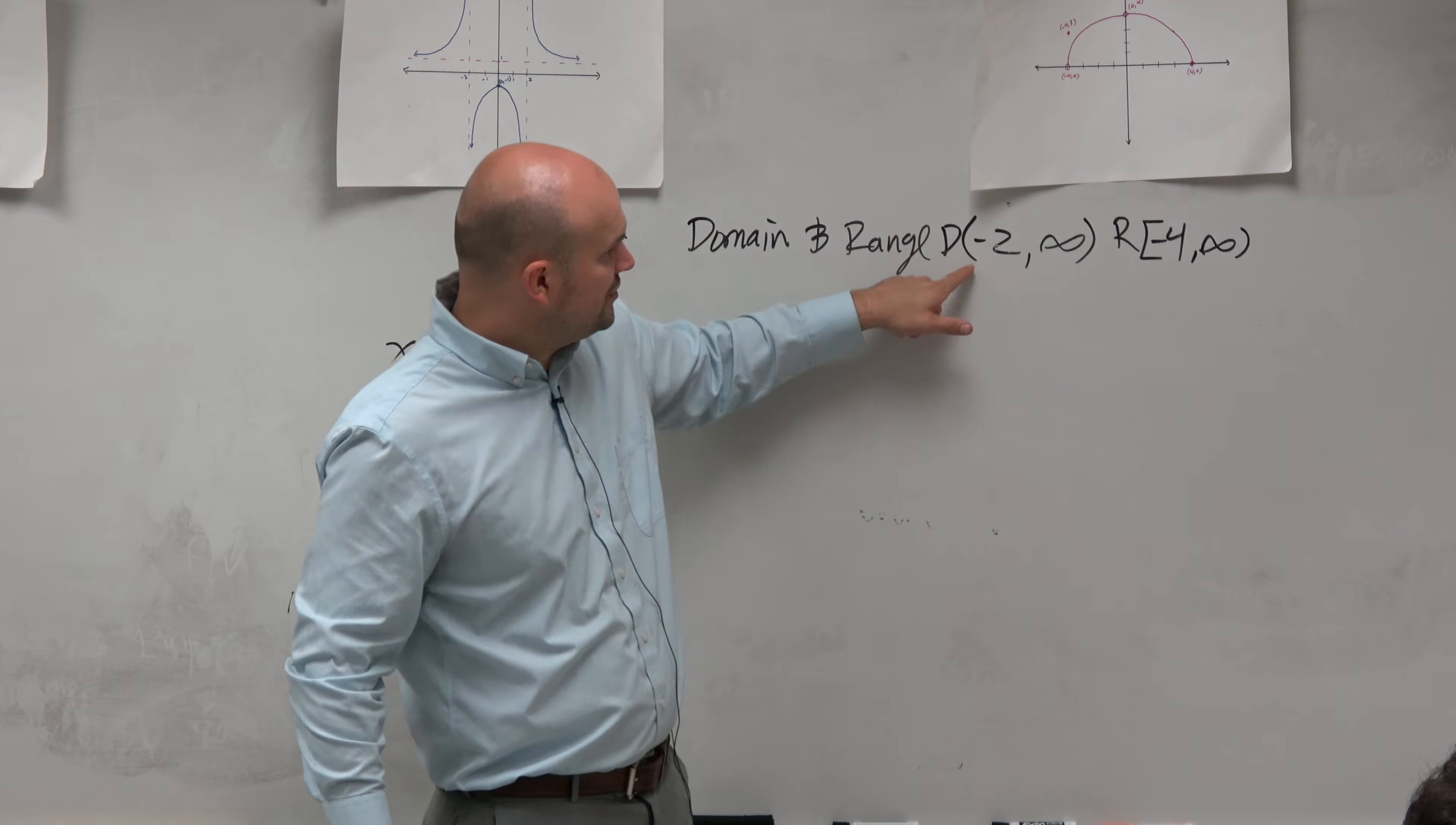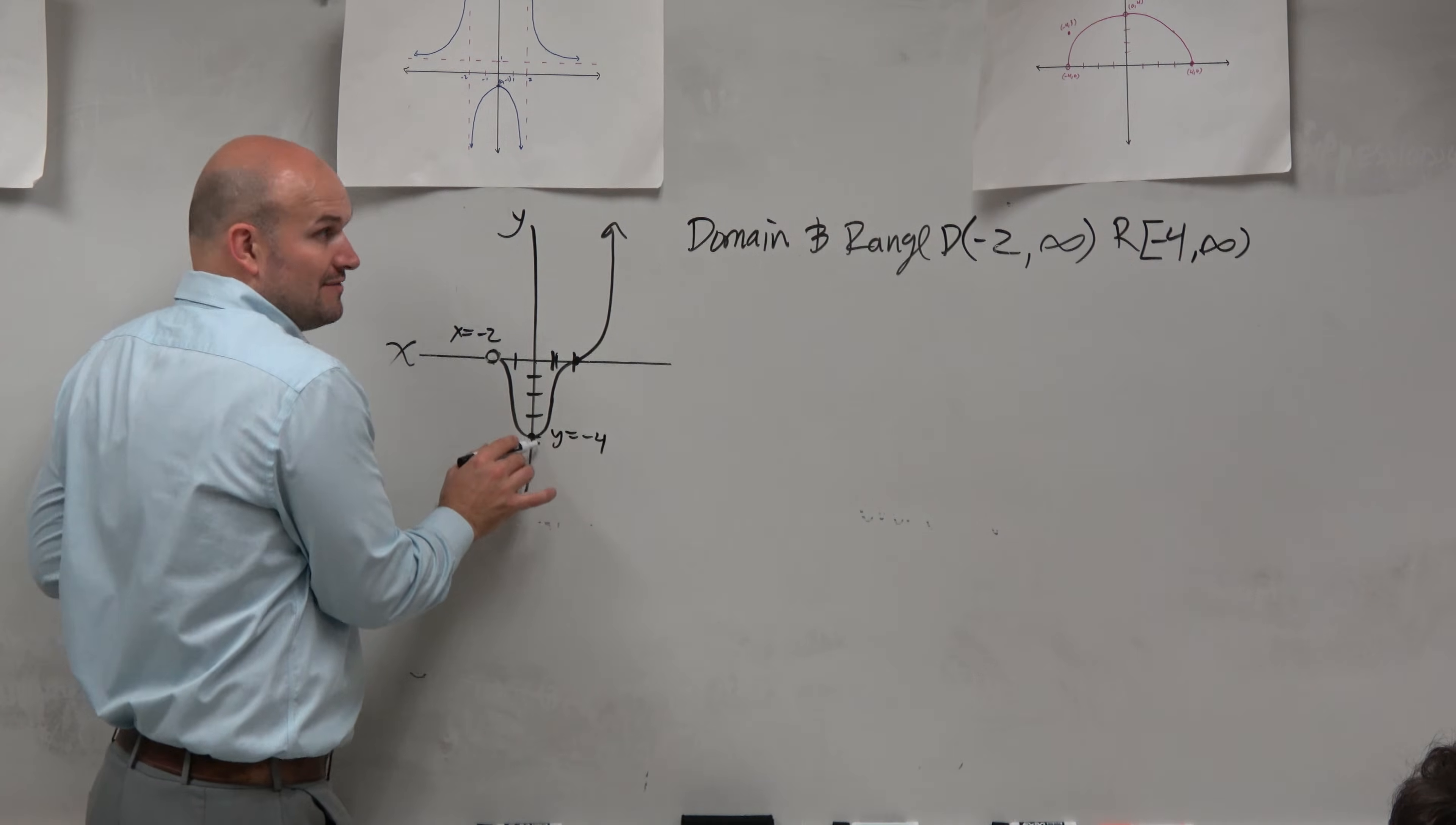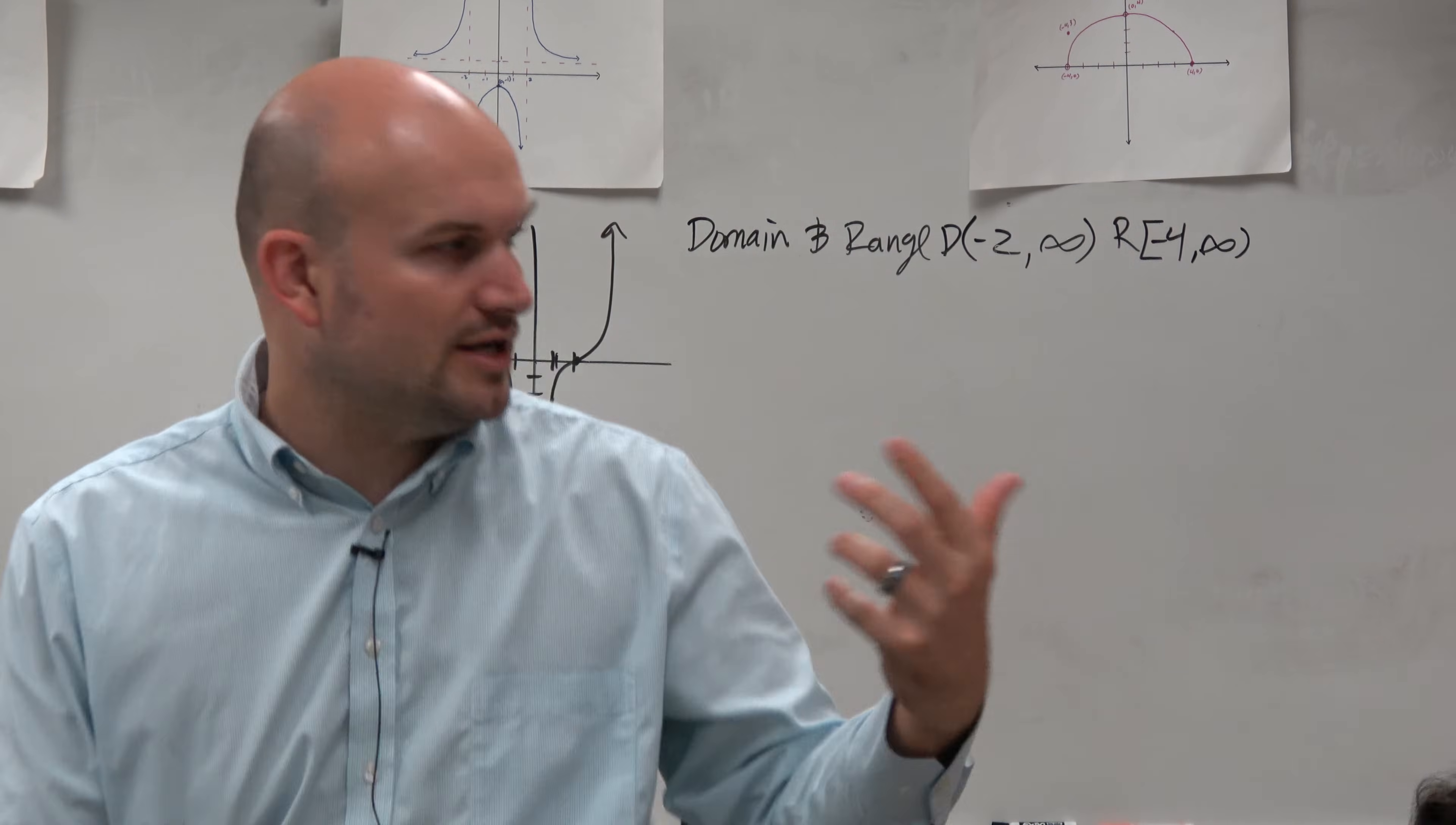So therefore, negative 2 is not included. This value is y equals negative 4. That is a part of the graph. So negative 4 with brackets means that is a part of the graph. It means it's included or excluded.